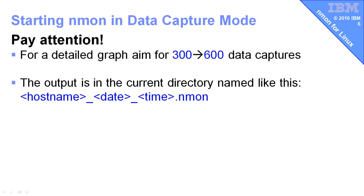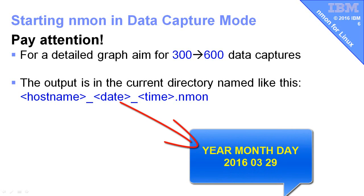The output is in the current directory named like this: the hostname, the date, and the time. I've very carefully selected this, so if you have a directory full of NMon files, when you list them out, they'll come out in hostname order so you can find them easily. They have the date and time in this particular format so that it actually comes out in date order. I have people writing scripts that decide the output file name of the NMon files, and they make horrendous mistakes like putting the month in alphabetical order. Whereas if you have them in numeric year, month, day order, they all come out in the right order.